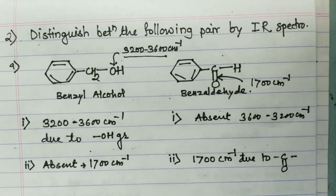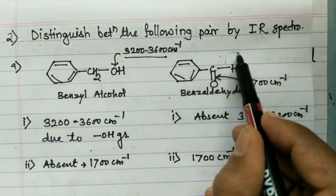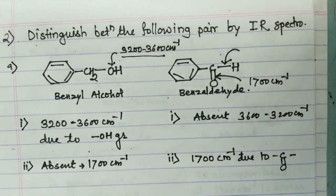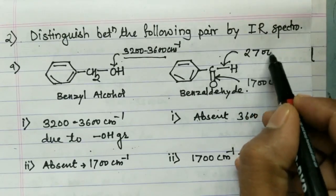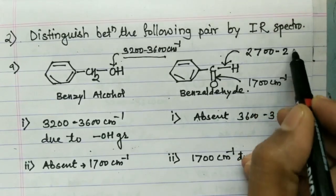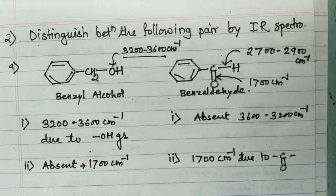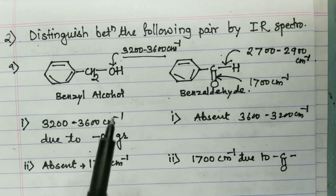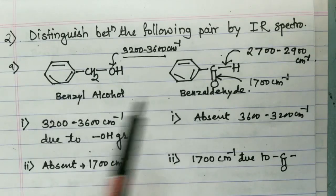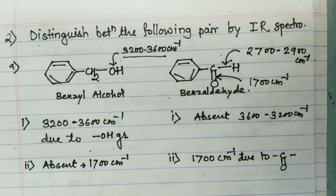One more characteristic difference between the two is the aldehydic C–H stretching frequency, which appears at 2700–2900 cm⁻¹. This frequency is definitely absent in benzyl alcohol. In this way, you can easily distinguish between any two compounds using IR spectroscopy.